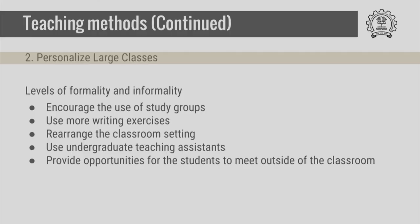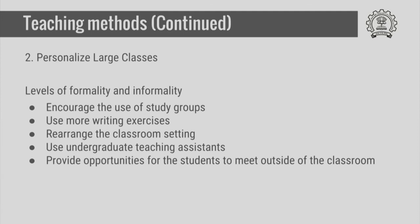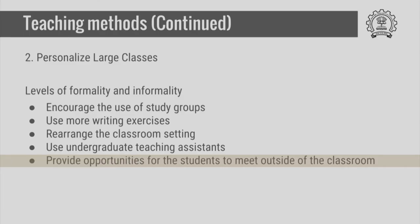In large classes, you should personalize as much as possible using formal and informal mechanisms. Some people are happy speaking, some are more comfortable writing. One could form small study groups and rearrange classroom and laboratory settings so that people from different backgrounds work together and learn mutually. When teaching undergraduate classes, using undergraduate teaching assistants is more useful because students feel more comfortable talking to mentors who are like them. Providing opportunities to meet outside of the classroom enhances the overall learning environment.